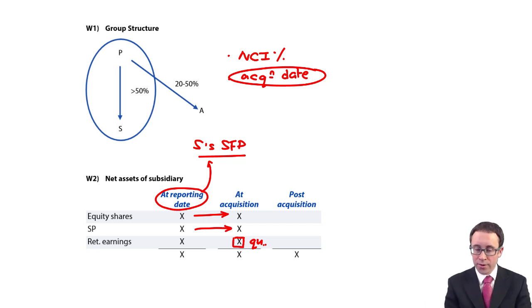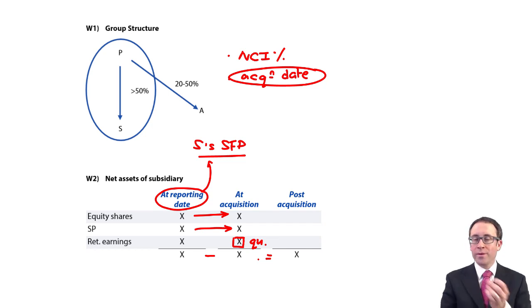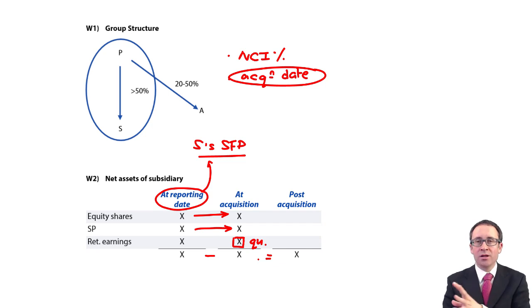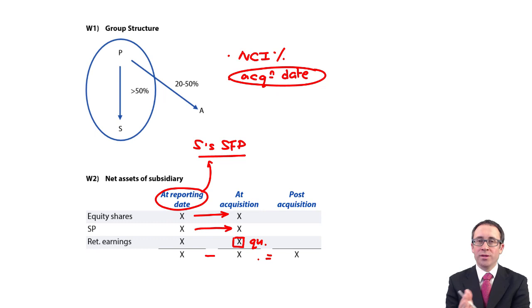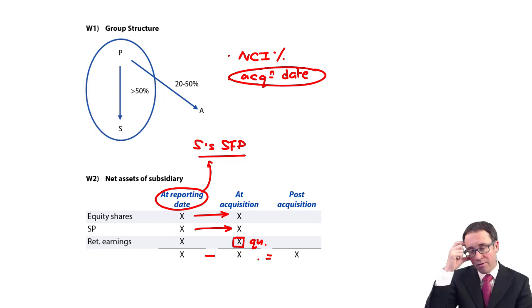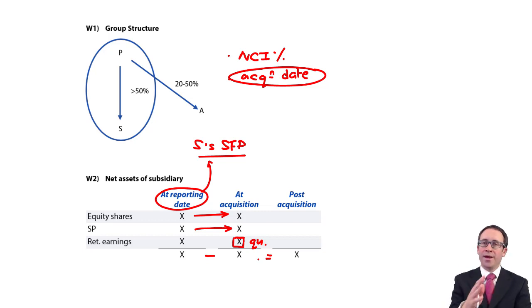All we do is look at the movement: from the reporting date, deduct what we had at acquisition, and that gives you the post-acquisition movement in net assets — which here is the same as the post-acquisition movement in retained earnings, because that's the only thing that is changing. You might have to do some additional calculations if the change in net assets isn't just due to movement in retained earnings but also maybe the revaluation reserve, but for now we're just looking at the movement being due to retained earnings.